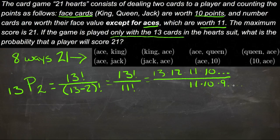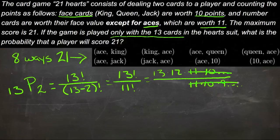So all the numbers from 11 and lower on top are the same as the ones on the bottom, and those will all cancel.